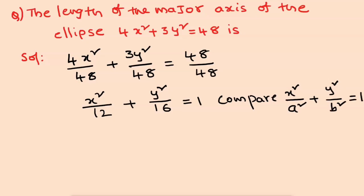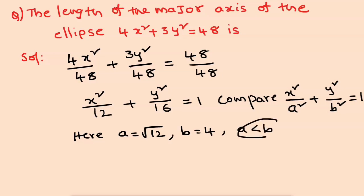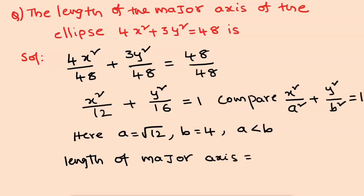We know a squared equals 12, then a equals root 12. Comparing, b squared equals 16, then b equals 4. Since a is less than b, the x-axis is the minor axis and the y-axis is the major axis. The length of the major axis is 2b, so substituting b equals 4 gives 2 times 4 equals 8. This is the final answer.